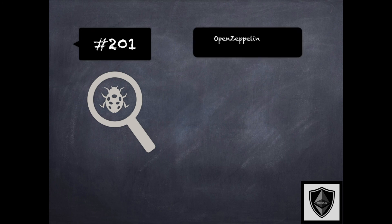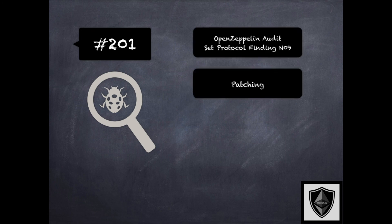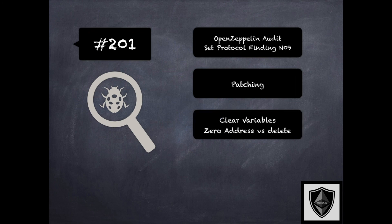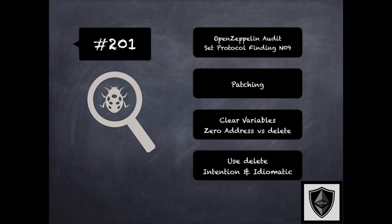Finding 201 is a finding from OpenZeppelin's audit of Said protocol, where the concern was about clearing address variables by setting them to 0 addresses instead of using delete. The recommendation was to consider replacing assignments of 0 with delete statements, because delete better conveyed the intention and was also more idiomatic. This is related to explicit over implicit in 164, clean up in 167, and clarity issues in 188 of the security pitfalls and best practices 201 module.